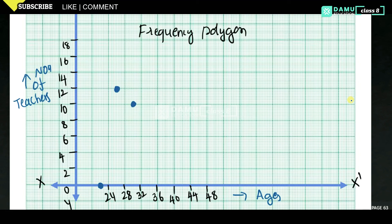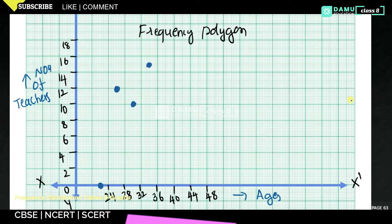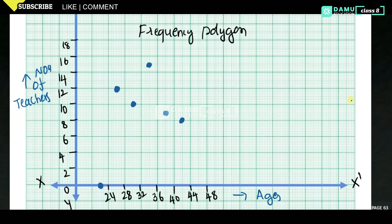For 32–36, frequency is 15 — we locate 15 on the axis; the mid value is 34, so we plot (34, 15). For 36–40, frequency is 9, mid value is 38, so we plot (38, 9). For 40–44, frequency is 8, mid value is 42, so we plot (42, 8).